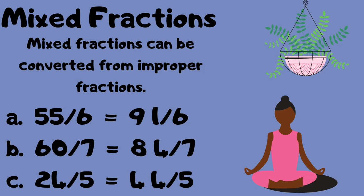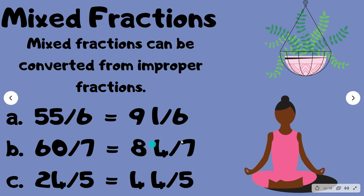Mixed fractions can be converted from improper fractions. So 55 over 6 can be converted to 9 and 1 sixth. 60 over 7 can be converted to 8 and 4 sevenths. And 24 over 5 can be converted to 4 and 4 fifths. The whole numbers are 9, 8, and 4 respectively, with the remainders forming the fractional parts.